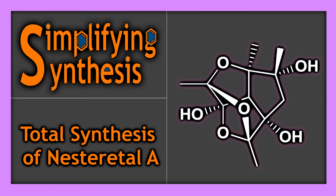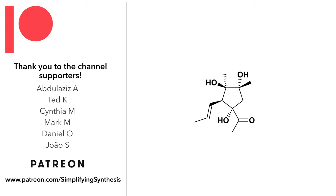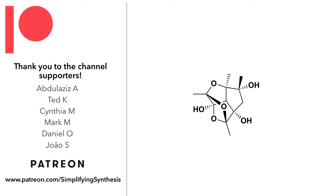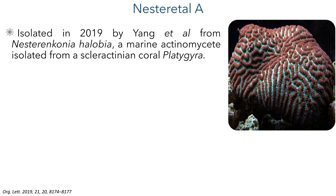Welcome back to Simplifying Synthesis. In this video we are going to look at the total synthesis of Nesterital A. This synthesis was published in Organic Letters by the group of Hisenaka Ito. Nesterital A was first isolated in 2019 by Yang et al from Nester anconia halobia, a marine actinomycete isolated from the coral Platygyra.